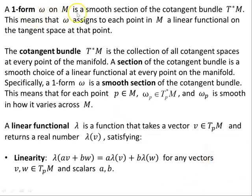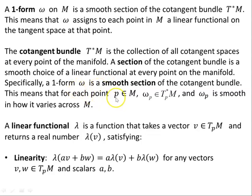A one-form omega on M is a smooth section of the cotangent bundle T*M, which means that omega assigns to each point in M a linear functional on the tangent space at that point. The cotangent bundle T*M is the collection of all cotangent spaces at every point of the manifold. A section of the cotangent bundle is a smooth choice of a linear functional at every point on the manifold. For each point P in M, omega at P is an element of the cotangent space T*_P M, and omega varies smoothly across M.